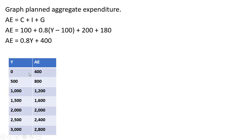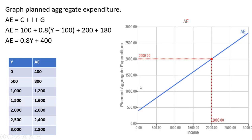If Y is 500, aggregate expenditure is 800, and so on. Notice that when income is 2,000, 0.8 times 2,000 is 1,600 plus 400, giving us planned aggregate expenditure of 2,000 — that's our equilibrium income level. Graphing these points, we get this blue line. When income is 0, planned aggregate expenditure is 400. When income is 2,000, planned aggregate expenditure is 2,000, our equilibrium. I could put in the 45-degree line here to get the Keynesian cross, and that 45-degree line would intersect right at this red point and then rise above the aggregate expenditure line.